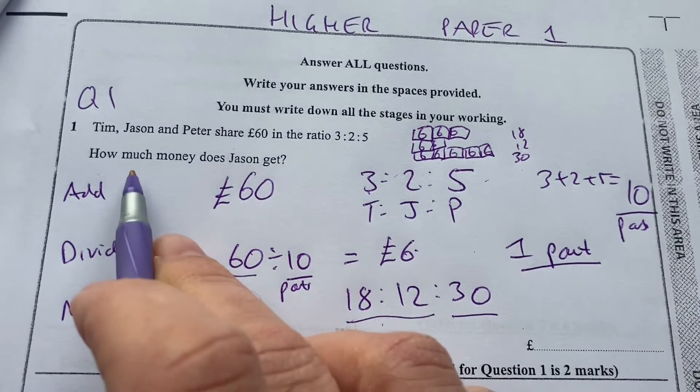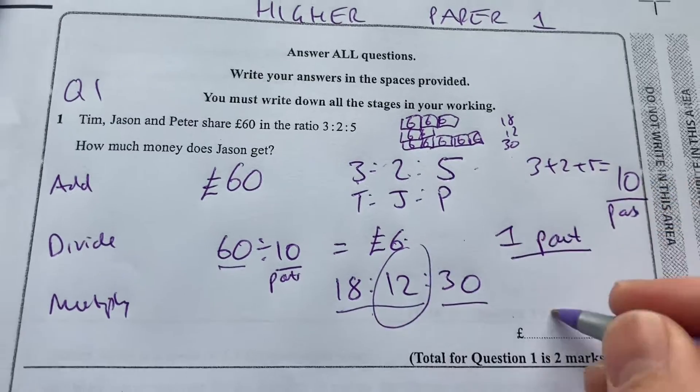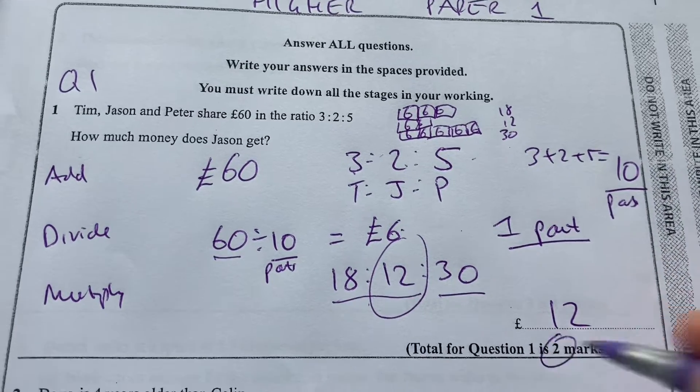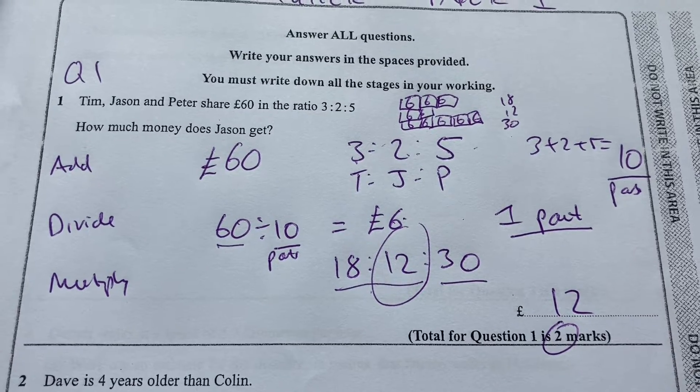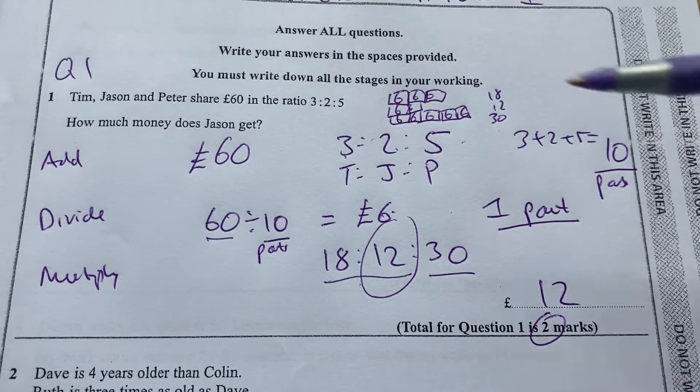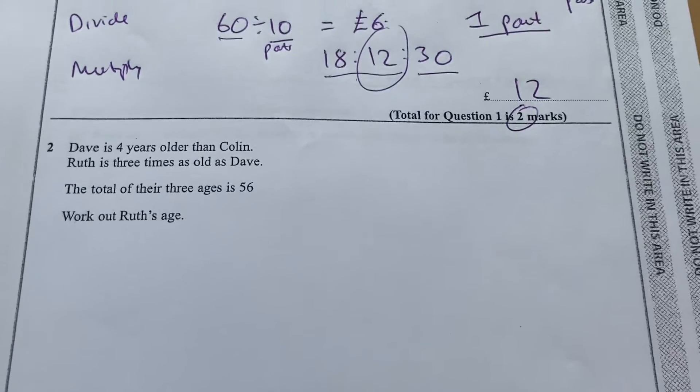To actually answer the question, how much does Jason get? Jason is the middle one. So that's 12. It's only 2 marks. I might have done a bit more work than necessary, but it's useful to explain the approach in a GCSE high exam. First question, you probably want to be getting through that quite quickly. Let's move on to question 2.